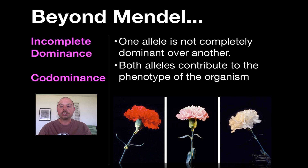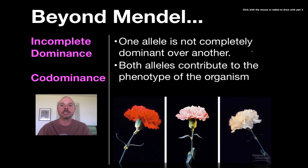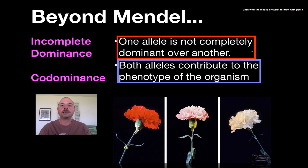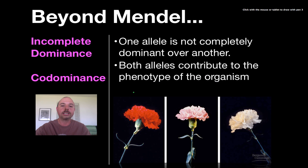The first concept I want to talk about is incomplete dominance and codominance. The principle of dominance says that one allele is going to be dominant over the other, but that's not entirely true all the time. In incomplete dominance and codominance, we have alleles where one is not dominant over the other, and both alleles actually contribute to the phenotype of the organism.